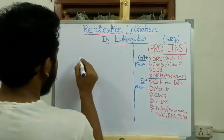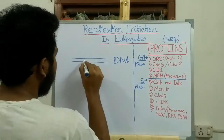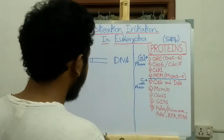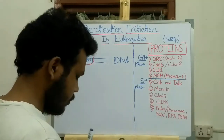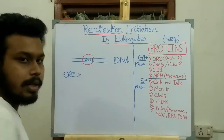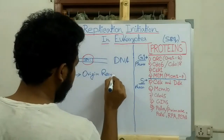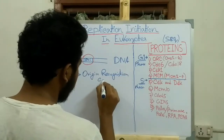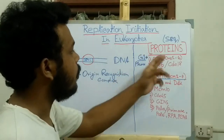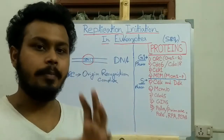Now suppose this is the DNA, this is the origin, and ORC binds this region. ORC is the origin recognition complex. ORC is a hexameric protein that contains ORC1 to ORC6 proteins, and it is the analog of DnaA protein of the prokaryotes.